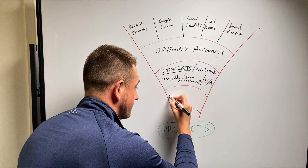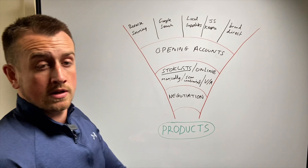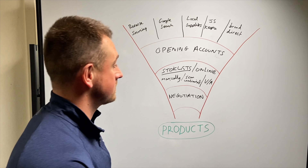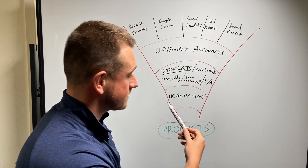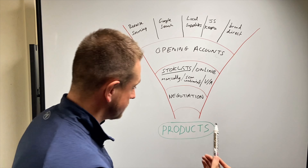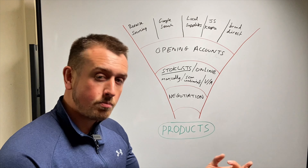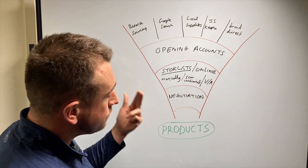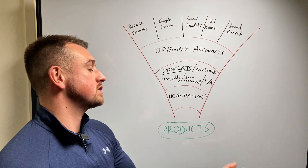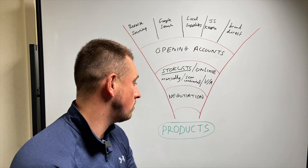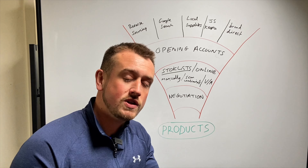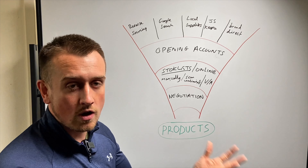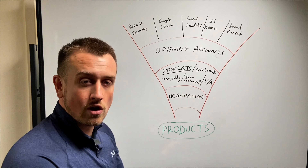The next step in here is negotiation. Once we've found the suppliers, opened the accounts, and gone through the stock lists, we find some products and move to the negotiation stage. Every single supplier that you buy from will at some point be open to negotiation. If you've just opened the account and you're trying to spend £500, chances are they're not going to negotiate with you because you're only spending a small amount of money and you haven't built up a relationship with them.